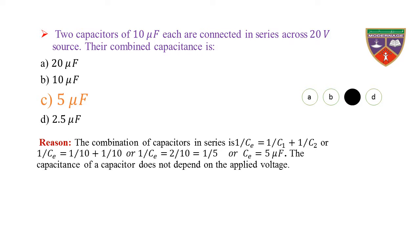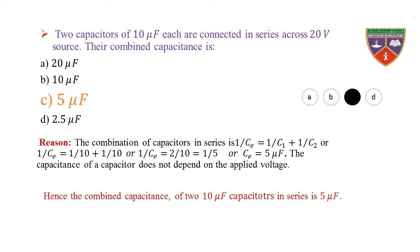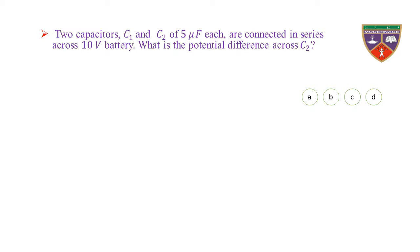Reason: The combination of capacitors in series is 1/C = 1/C1 + 1/C2, or 1/C = 1/10 + 1/10 = 2/10 = 1/5, so C = 5 microfarad. The capacitance of a capacitor does not depend on the applied voltage. Hence, the combined capacitance of two 10 μF capacitors in series is 5 microfarad.